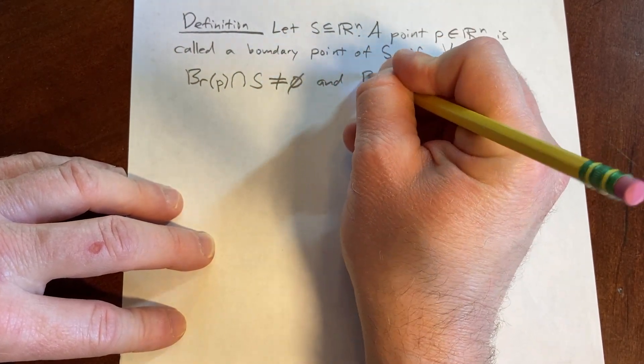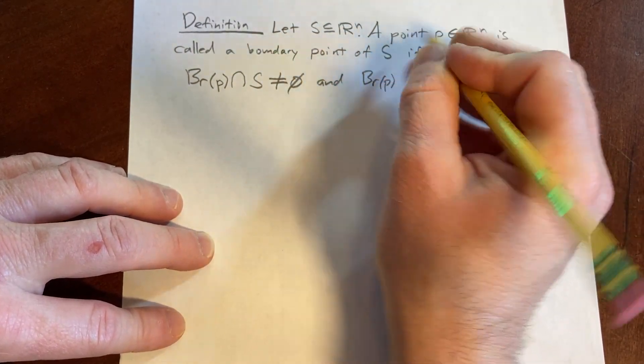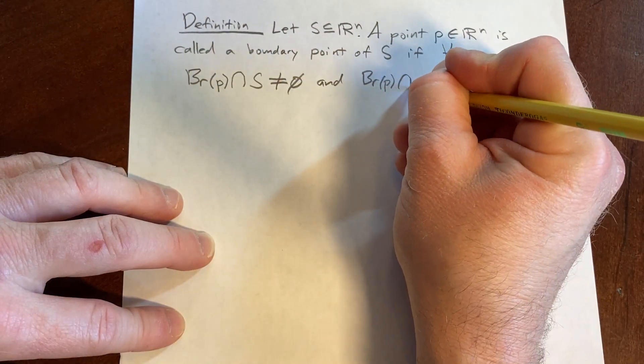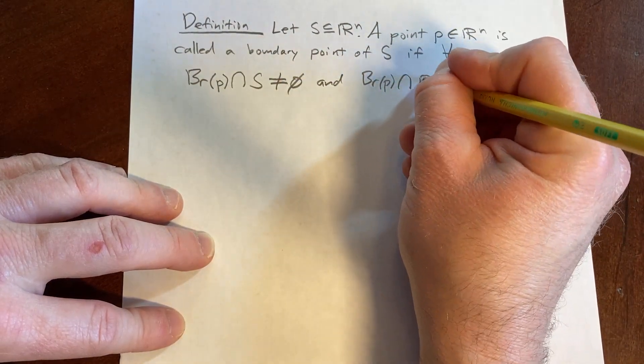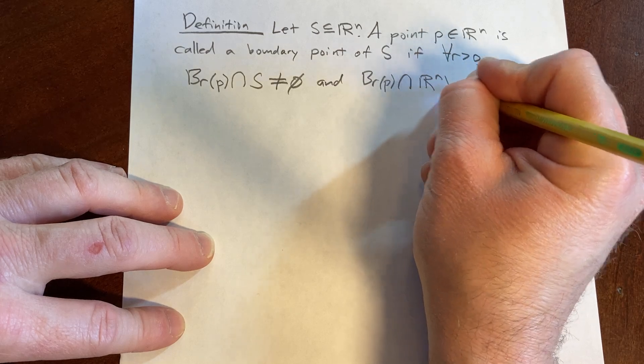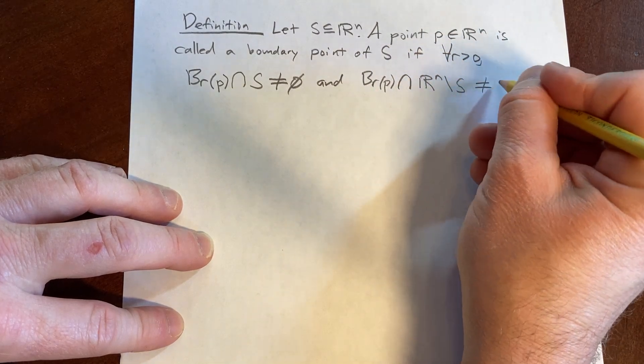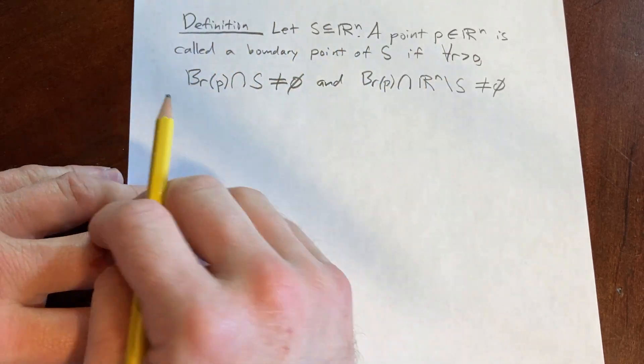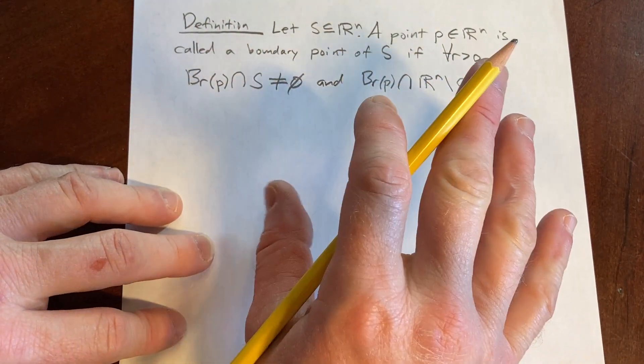And if you take that same open ball centered at P of radius R, and you intersect it with the complement, so Rn set minus S, that is also not empty. So there's some stuff in both of these sets.